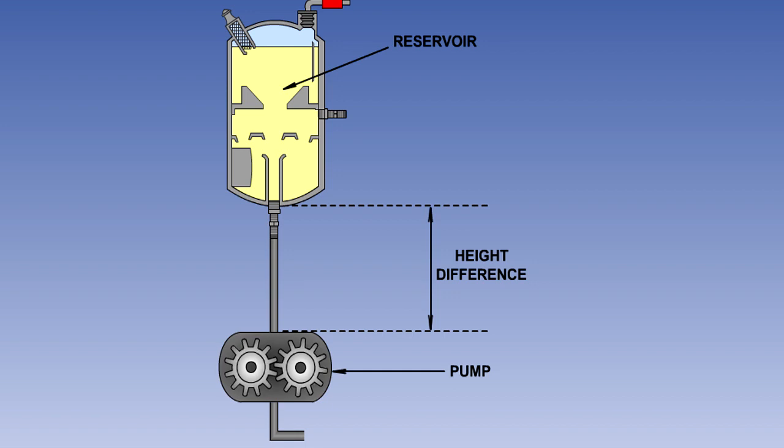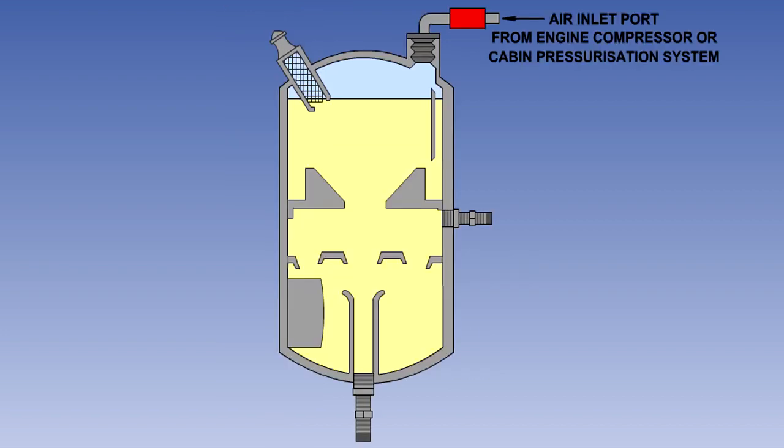The reservoir helps to prevent cavitation by providing a head of fluid for the pump. To do this, the reservoir is located higher in the system than the pump to produce a positive pressure at the pump inlet. In many installations, the reservoir is also pressurized with air from the engine compressor to further increase the fluid pressure at the pump inlet, thus reducing the possibility of cavitation at high altitude.